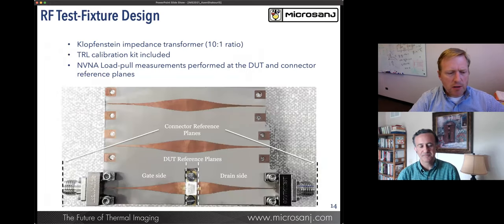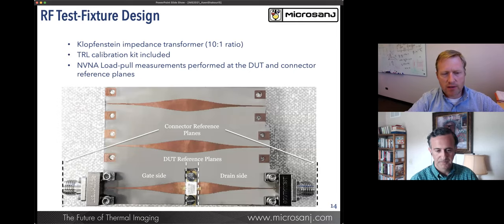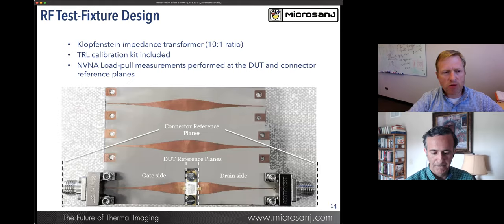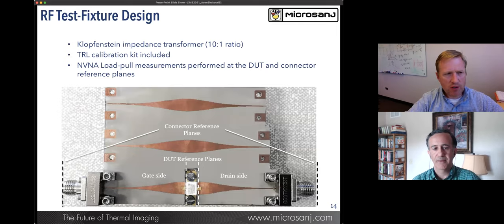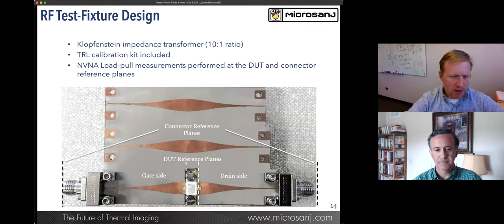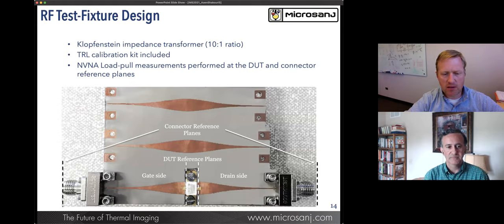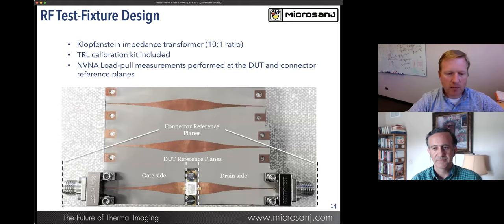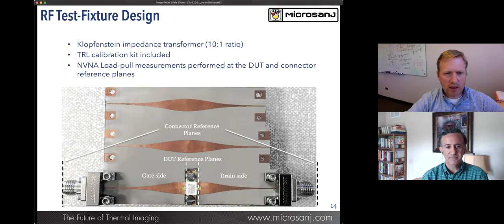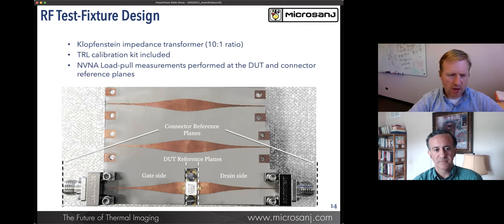We were really interested to see how we could measure these devices in a load pull system. What you're showing here is some work where there's an impedance transformer designed with a TRL calibration. On the bottom of the image is where the gallium nitride device and its package is inserted into the system. For measurements, we'll remove the lid so that we can see down on the gallium nitride device itself and then do the thermal reflectance measurements. This is going to be embedded in an NBNA load pull system.